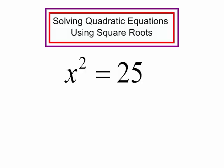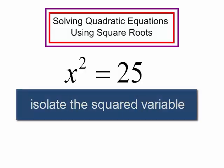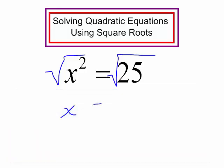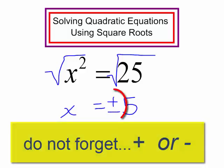In order to solve these, I want to get my squared term by itself, and then I will take the square root of both sides. The square root of x squared is just x, and the square root of 25 is 5. But whenever you take the square root of both sides, your answer will be plus or minus.